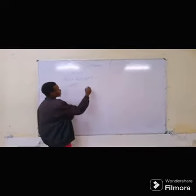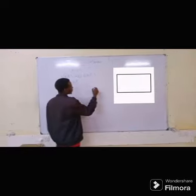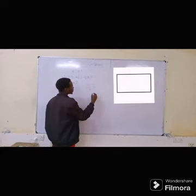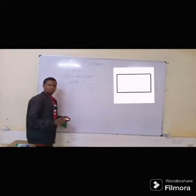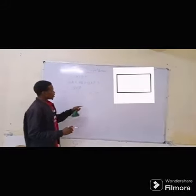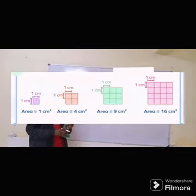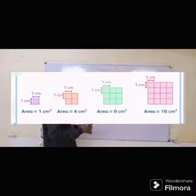For example, in a rectangle, we have a length and width. There are two dimensions. Also in a square, we have two dimensions.